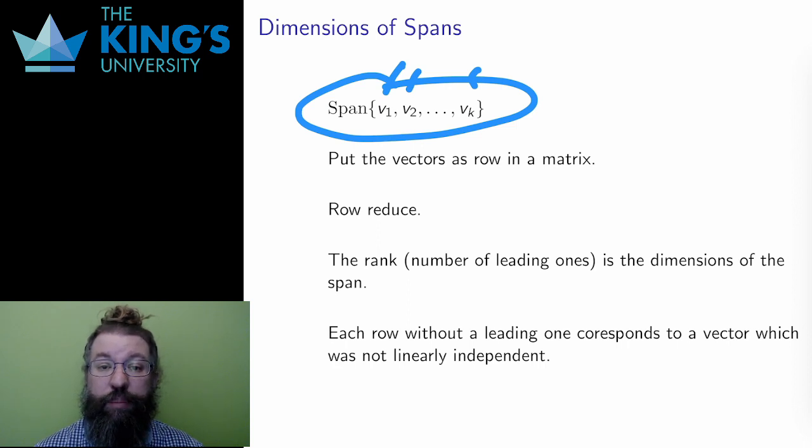However, as I mentioned in the past, some vectors might be redundant. They may be unnecessary to the span. The dimension of the span is the minimum number of vectors needed to produce the span. How do I calculate this? How do I check for these redundancies? Well, this is the algorithm.